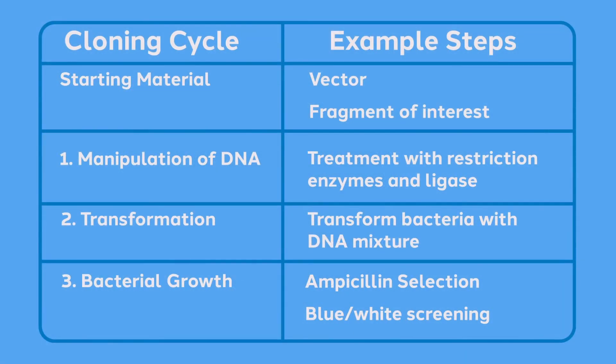At this point, let's start putting these steps together. As summarized in this slide, you can see our starting material, which we can refer to generically as a vector and a fragment of interest. In this example, manipulation of the DNA is being done with restriction enzymes and ligase. After manipulating the DNA, we transform bacteria and allow the bacteria to reproduce. Bacteria will be exposed to an antibiotic, such as ampicillin, so that only bacteria carrying a circular plasmid can grow. At this point, we have the option of screening bacterial colonies as well to see if they carry an insert.